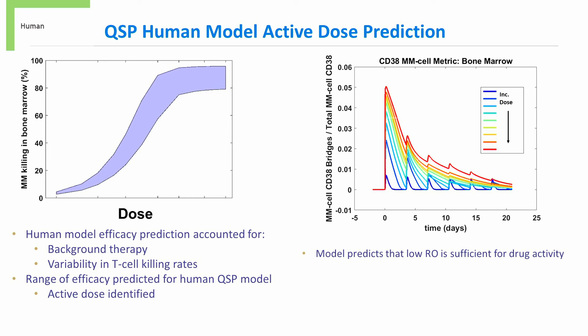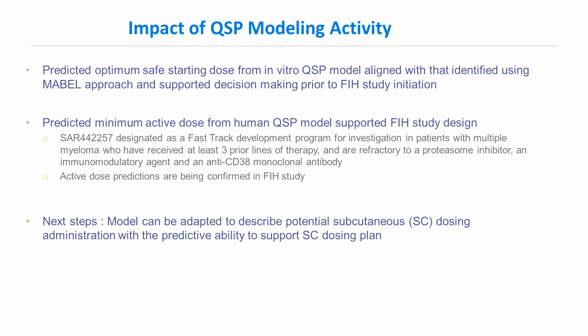On the right, we illustrate the effect of increasing doses on multiple myeloma cells' CD38 receptor occupancy. While our model predicts the somewhat expected increase in occupancy with dose, it does suggest that low receptor occupancy is sufficient for drug activity.